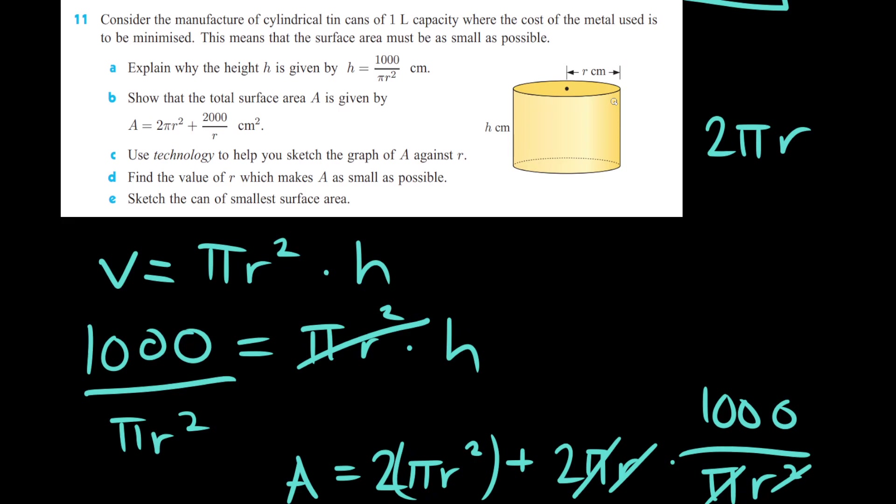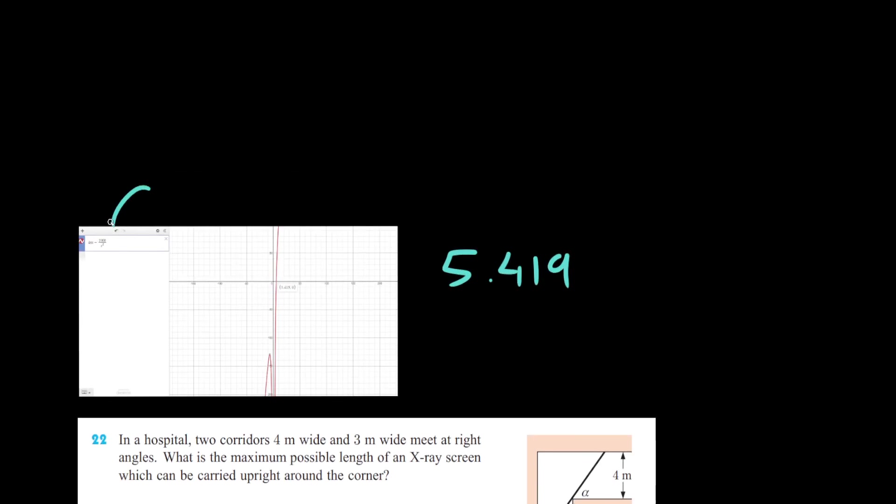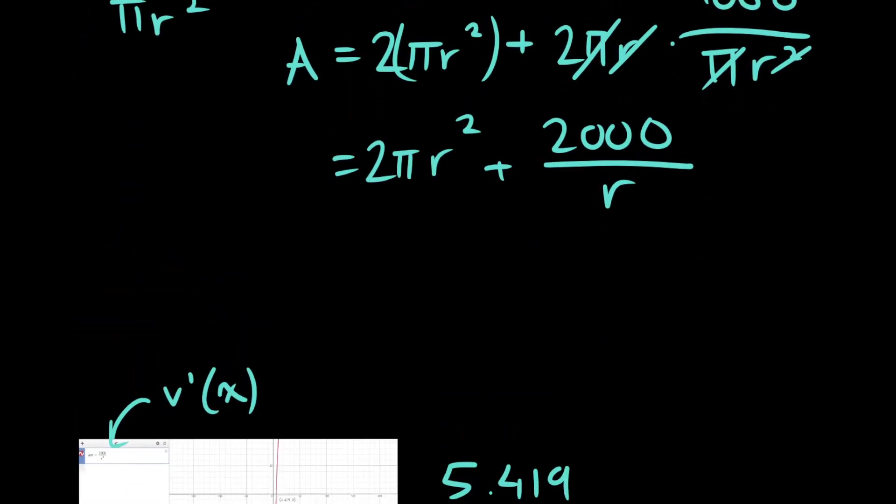The next part asks us to use technology to help you sketch the graph of A against R. So I don't have my TI-84 on here, so I went ahead and used Desmos ahead of time. The answer to this is around 5.419. Since we have a graph already, we're looking for the zero, which minimizes the surface area for the usage of metal. That's something important to remember. Since we're looking for zeros, it's going to be a zero on the derivative graph.